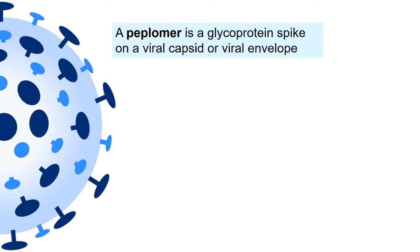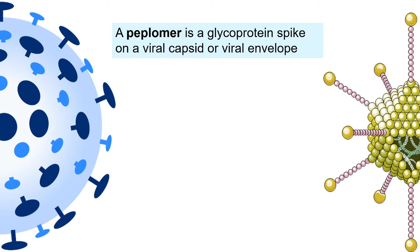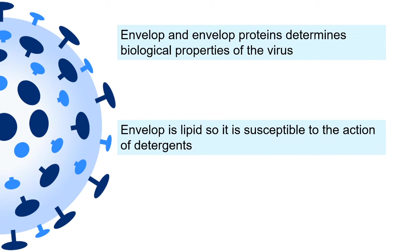An important terminology in virology is pepolomers. Pepolomers are glycoprotein spike proteins present on the viral capsid or in the viral envelope. These spike or envelope proteins are called pepolomers. The envelope gives the virus its biological properties and determines its virulence and how it enters the cell, making it more dangerous. The good thing about the envelope is that it is a lipid, so it is susceptible to the action of detergents — we will cover which detergents and disinfectants can be used to kill viruses in this series.